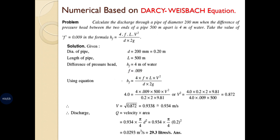Example 2: Calculate the discharge through a pipe of diameter 200 mm when the difference of pressure between the two ends of the pipe, 500 meters apart, is 4 meters of water. Take the value of F as 0.009 in the formula HF = 4FLV² / 2GD. The length is 500 m, head loss is 4 m, and diameter is 200 mm (0.20 m).